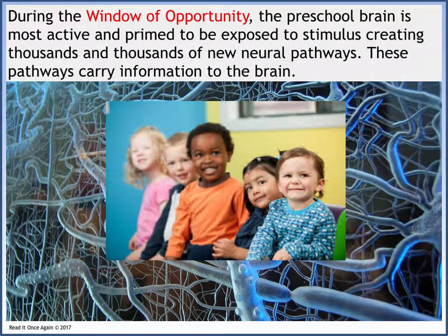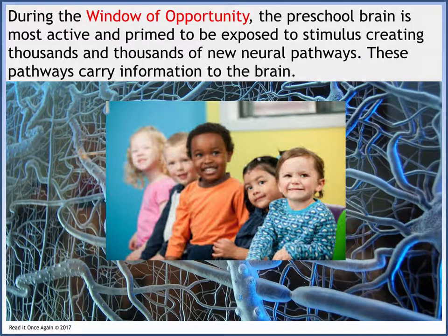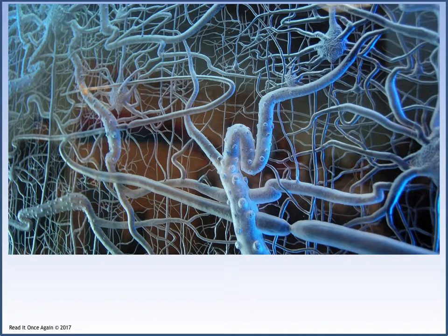During this window of opportunity, the preschool brain is most active and primed to be exposed to stimulus, creating thousands and thousands of new neural pathways. The brain of the one-to-five-year-old child was extremely active and curiously exploring all aspects of the environment, being exposed to hundreds of new concepts and pieces of information every day. Each time the brain is introduced to a new bit of information, it creates a new neural pathway — a highway for information to travel to the brain. It is possible that hundreds of new neural pathways can be created in just one day.